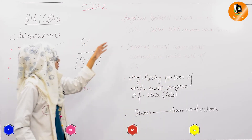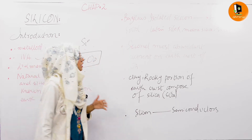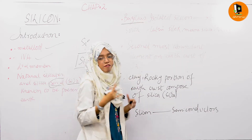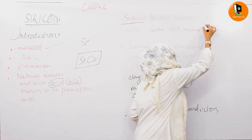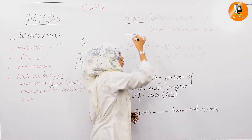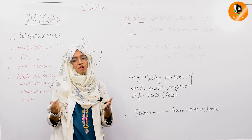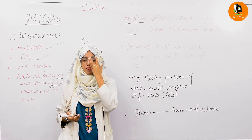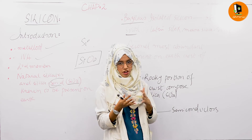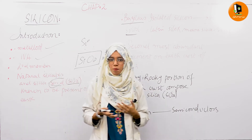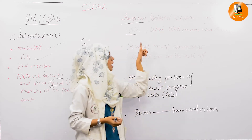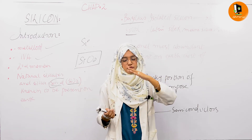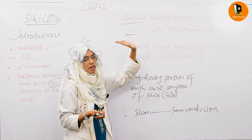Regarding the isolation of silicon, it was first isolated by Berzelius. It was isolated in a solid form — specifically an amorphous solid. The difference between amorphous and crystalline solids is: if atoms are arranged in regular patterns they are crystalline, and if they are not arranged in regular patterns they are amorphous. So silicon was first isolated as an amorphous solid. This is a possible MCQ point — silicon is an amorphous solid.